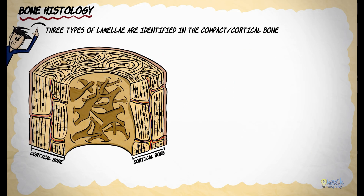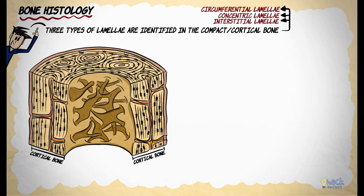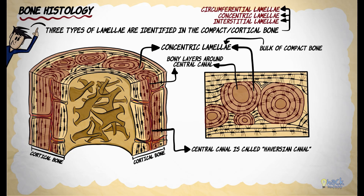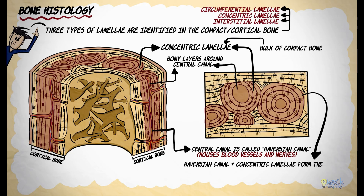Histologically, three types of lamellae can be identified in compact bone: the circumferential lamellae, the concentric lamellae and the interstitial lamellae. The bulk of compact bone is made of concentric lamellae — bony layers wrapped around a central cylindrical tunnel called the haversian canal, which houses blood vessels and nerves. The haversian canal and the concentric lamellae together form the haversian system, and the haversian system forms the basic metabolic unit of bone called the osteon.